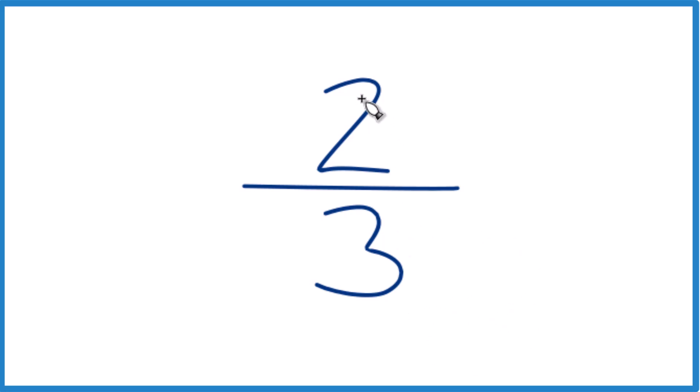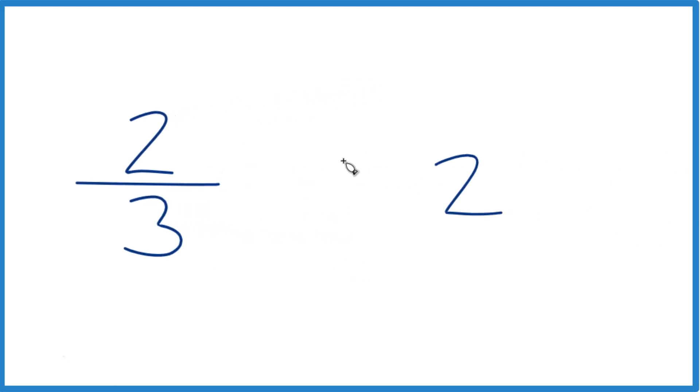So first off, this is two divided by three. We want to know how many times three is going to go into two. So we could write our two right here, and then three, and we can do long division here.